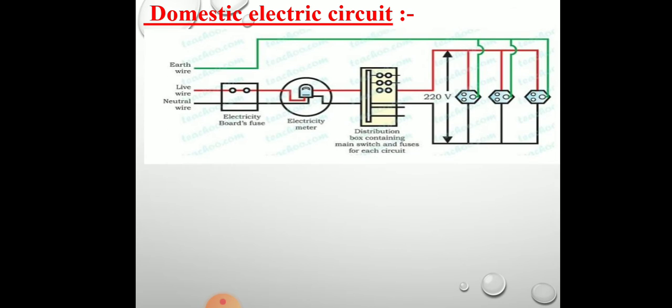The cable has three wires. The first is the live wire, the next is the neutral wire, and the third is the earth wire. The neutral and the earth wires are connected together at the local substation so that they are at the same potential — that is, zero volt.